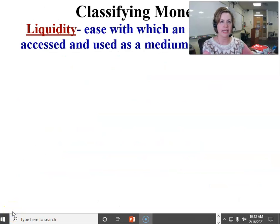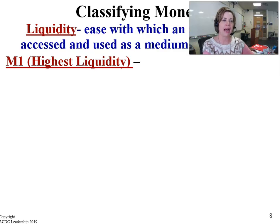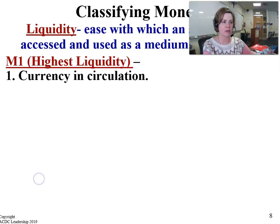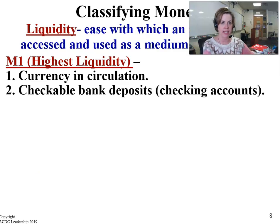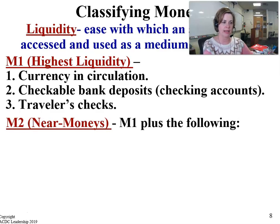Liquidity refers to the ease with which an asset can be accessed and used as a medium of exchange. The M1 classification of money has the highest liquidity, referring to the currency in circulation — the coins or paper money we carry around — checkable bank deposits such as checking or demand accounts, and also traveler's checks.